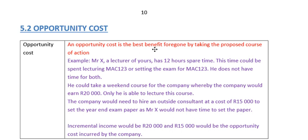The next concept to understand is that of an opportunity cost. An opportunity cost is the best benefit forgone by taking a proposed course of action. So because I did something, I'm not able to do something else, and there's a cost attached to it.